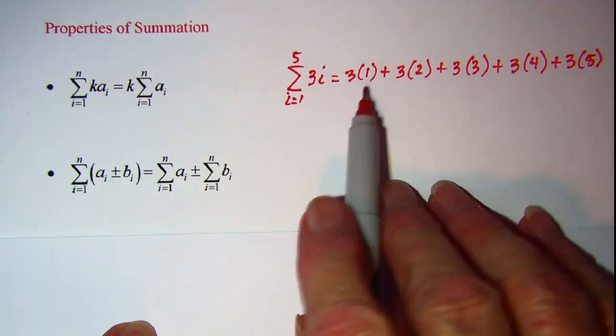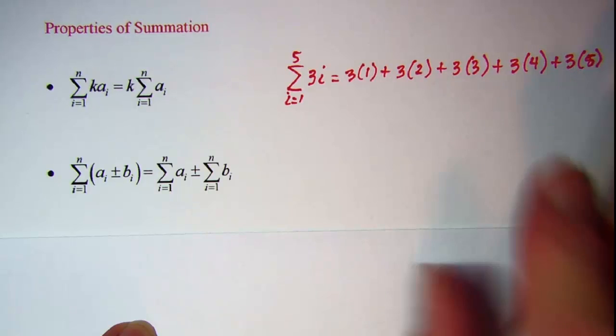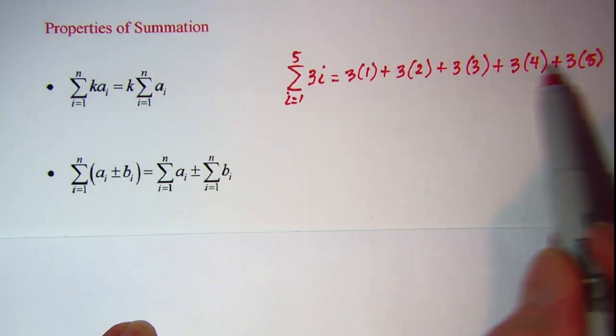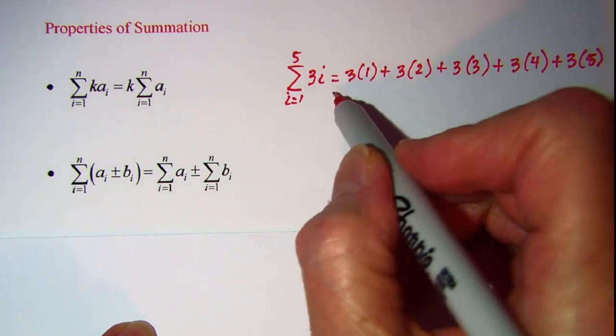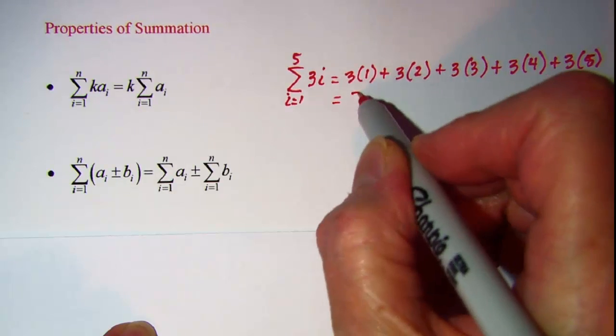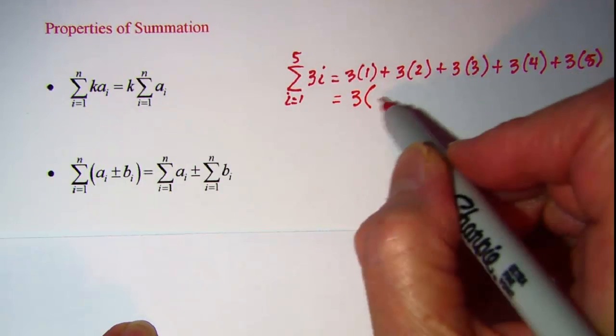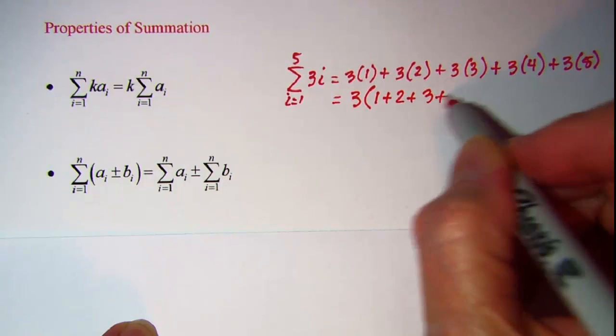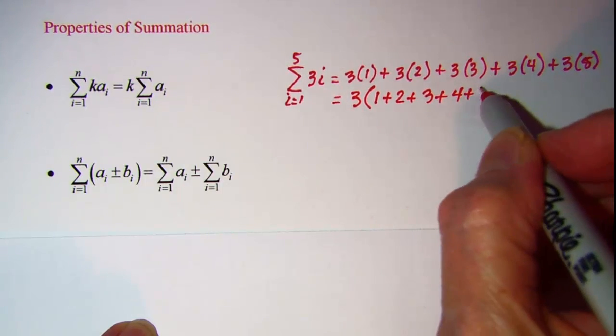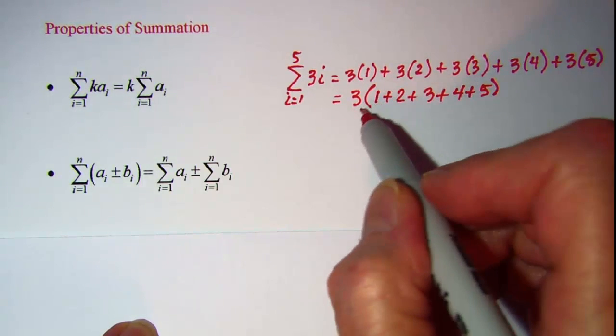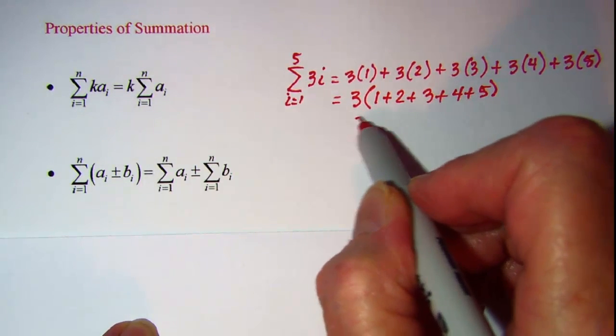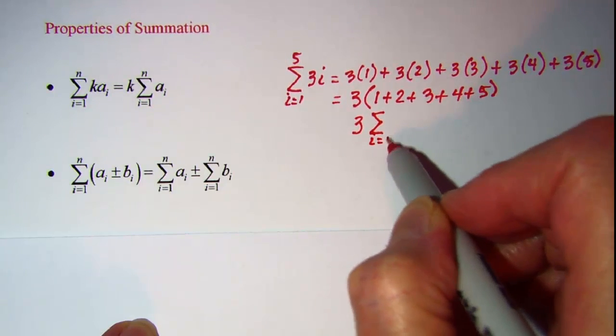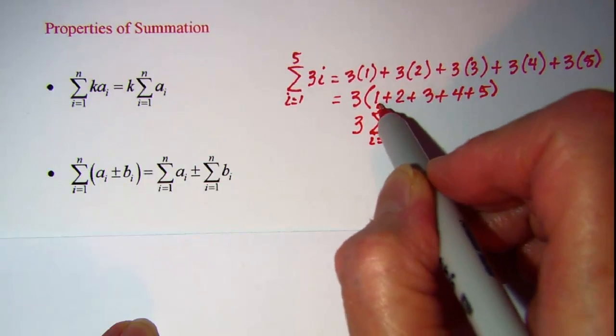So our i goes 1, 2, 3, 4, 5 and we have always the coefficient 3 on each term. Well we know by the distributive property that the 3 can come out and we would have just 1 plus 2 plus 3 plus 4 plus 5. And so this is the same as 3 times the summation as i goes from 1 to 5 of i.